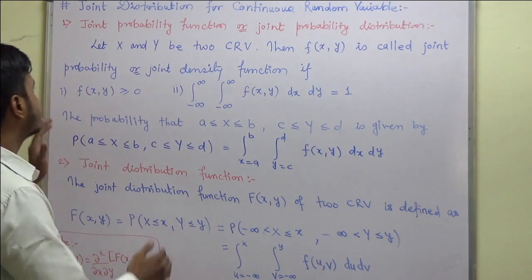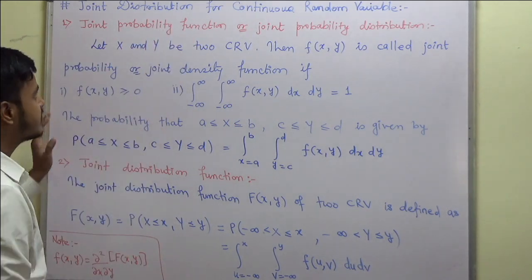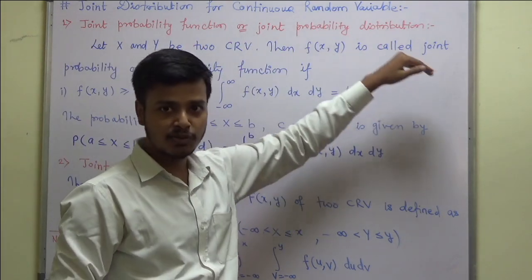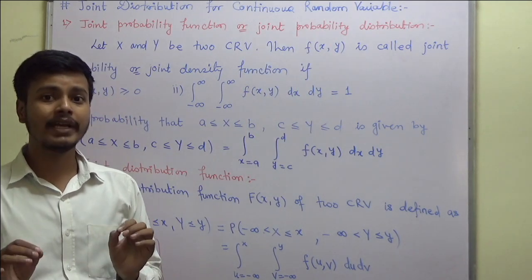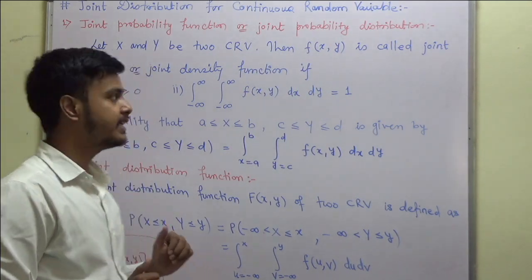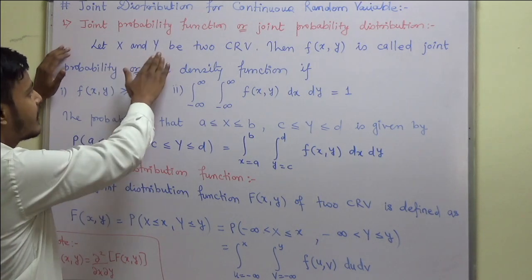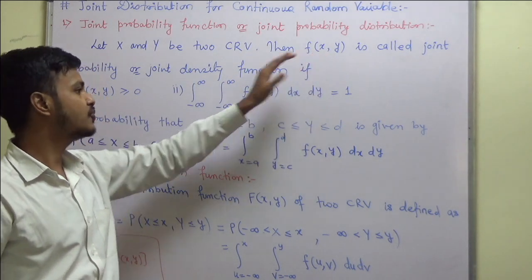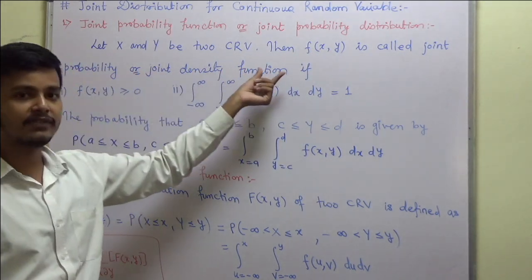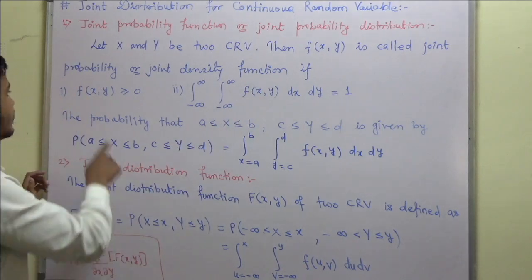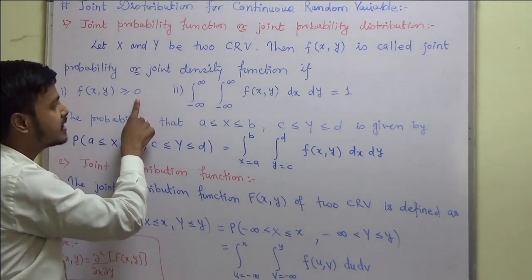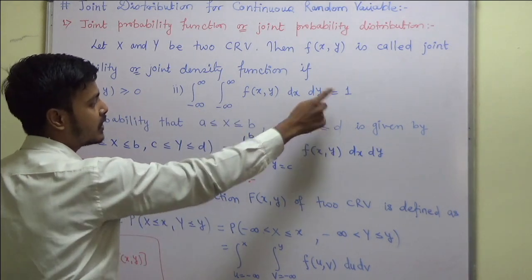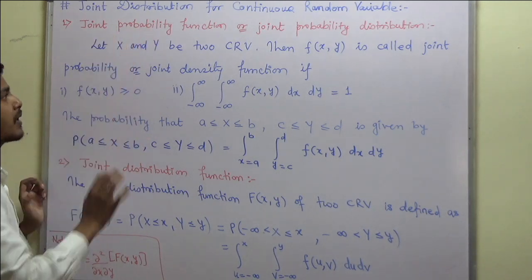Let us see what the joint probability function is — also called the joint probability distribution function or joint density function, or probability density function. Here two continuous random variables are involved. The function is said to be a joint probability or joint density function if f(x, y) is greater than or equal to zero, and the double integration equals one.